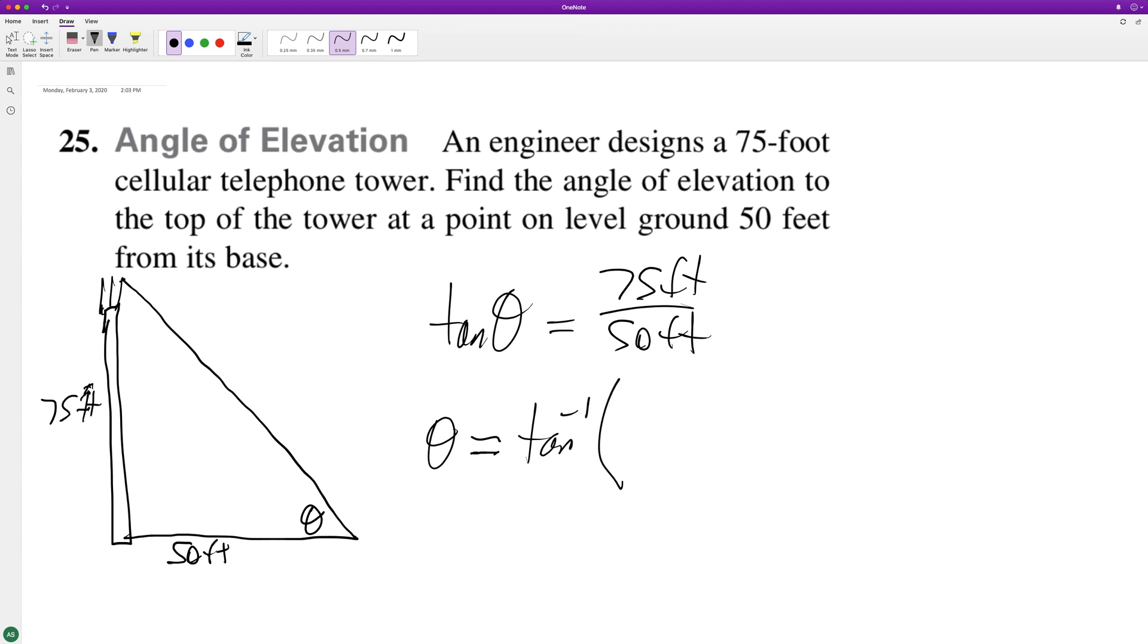Make sure your calculator's in degree mode. 75 over 50, and we're gonna get approximately, depending on how far you want to take it out, but to two decimal places we'll get 56.31 degrees.